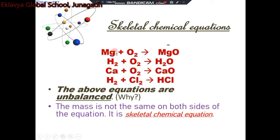Now tell me, what is a skeletal chemical equation? A chemical equation which is not balanced is called a skeletal chemical equation. Not balanced means the number of atoms on left side and right side are not same. Or in other words, the mass is not same on both sides of the equation.